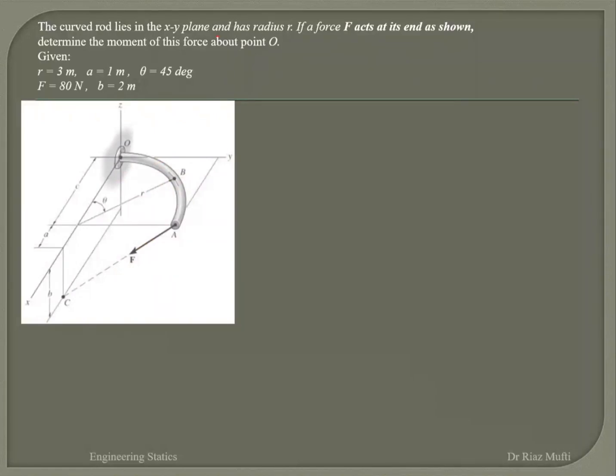So what's the very first thing we need to do? That is the approach we're going to use. The moment at O is r_OA cross my force vector. So how am I going to get r_OA? The very first thing I need is r_OA.